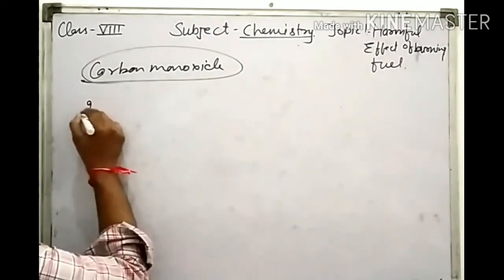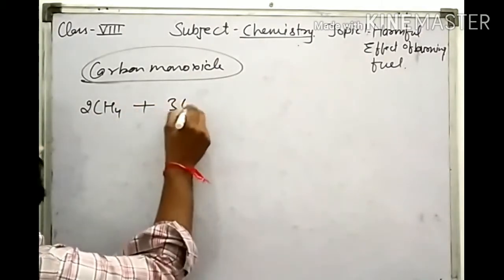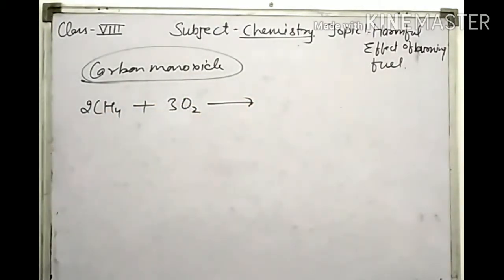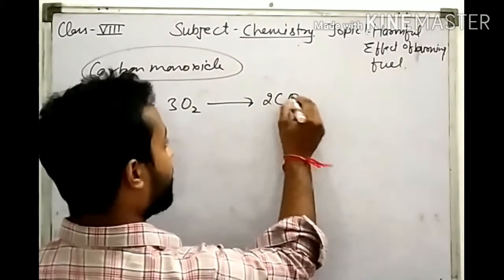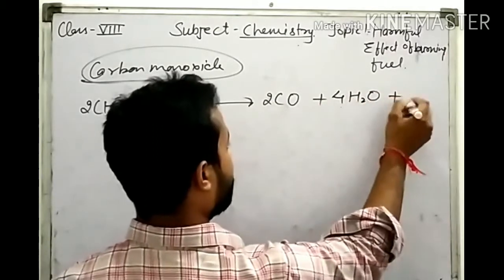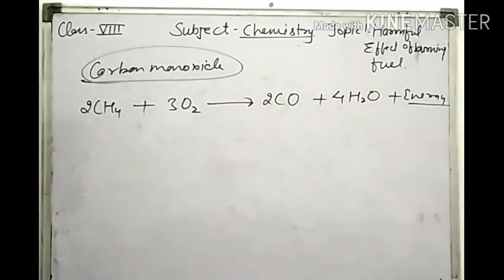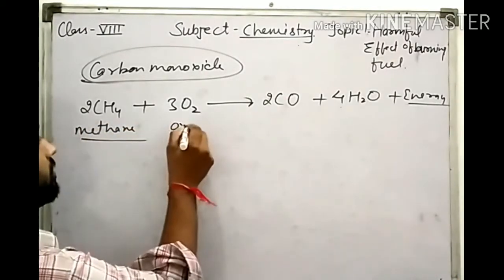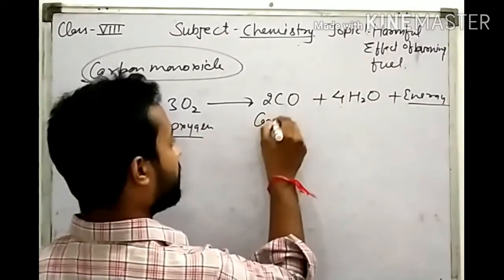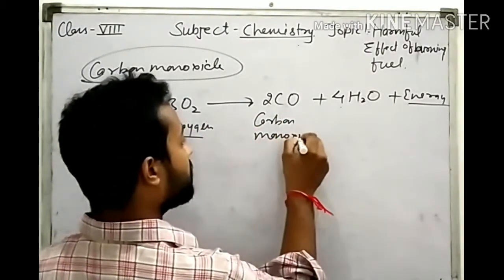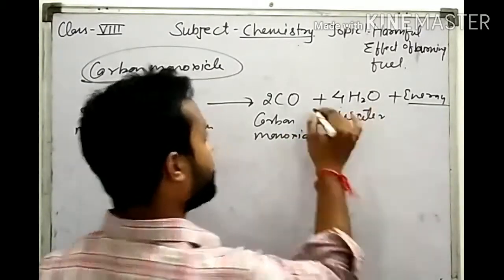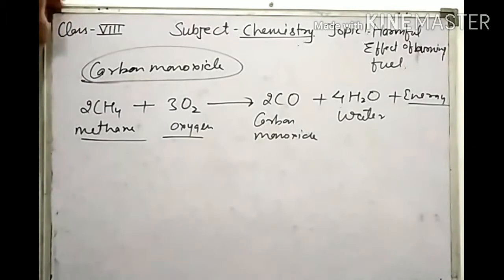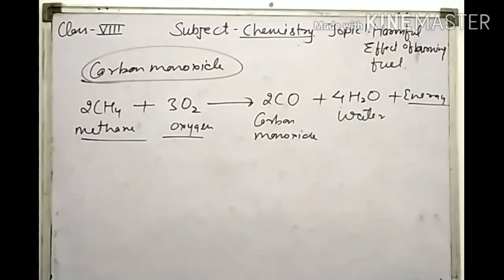For example, if we burn methane in an insufficient amount of oxygen, the reaction releases carbon monoxide, water, and heat energy. Methane is a hydrocarbon; with insufficient oxygen, the products are carbon monoxide and water. This is because methane used as a fuel undergoes incomplete combustion when oxygen supply is limited.